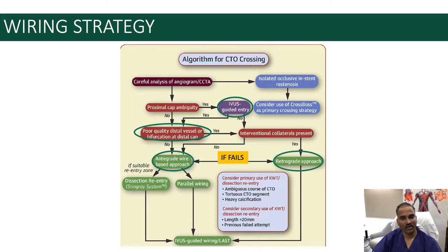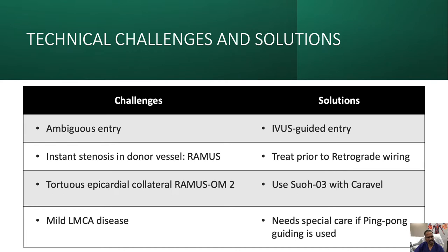Technical challenges in this case: ambiguous entry — using IVUS for proximal cap entry; in-stent stenosis in the donor vessel, especially Ramus — it's always better to treat it before retrograde wiring; tortuous epicardial collateral from Ramus to OM, so we can use CO03 or Caraval microcatheter to overcome the tortuosity; mild LM/CIA disease especially ostial, requiring special attention during retrograde ping-pong guiding and antegrade wiring with an 8 French guide to avoid ischemia in this dominant left circumflex.